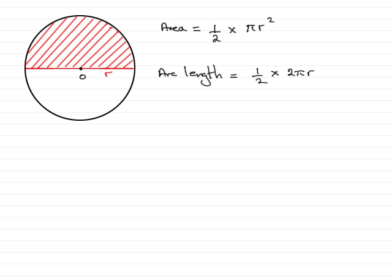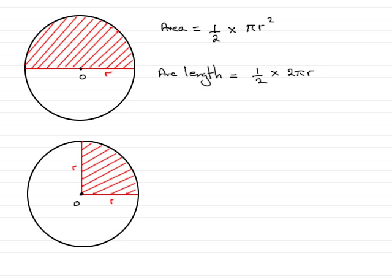Now let's take another sector, a well known sector. Here we have a quadrant, which is a quarter of a circle. So again, if we were looking for the area, it would equal one quarter of the area of a circle. And the area of a circle, π r².